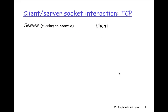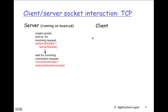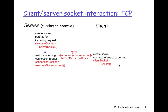In the client-server socket interaction, the server runs on a host, creates a socket with port equal to X, and the welcome socket equals a new server socket waiting for incoming connection requests. A connection socket equals welcome socket dot accept. On the client end, you create a socket and connect to the host ID and port. You're creating sockets on both ends — client and server. The TCP connection setup is the creation of these sockets.